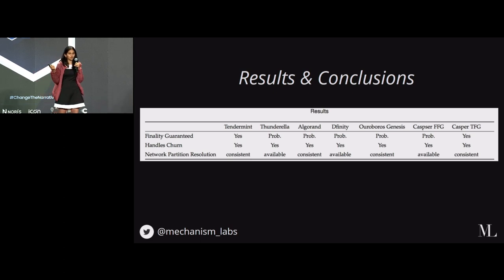The second thing, handling churn, is basically can people move in and out of the network? And the third is network partition resolution. There's a very famous theorem called the CAP theorem, which basically says in the case of any internet partition, you can either be consistent or available, but definitely not both. Either your protocol can be online and keep adding values, but it's likely that these values can change later. Or you can pause your protocol right now and everyone has the same view of it, but you're not going to add anything new until the network has resolved its partition.